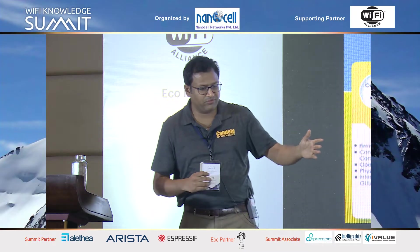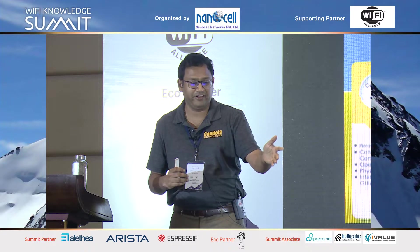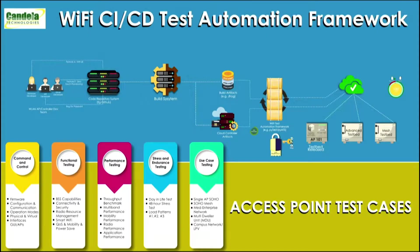The framework is automating almost 10,000 test cases for Wi-Fi testing; right now we have about 3,000–4,000 automated. They cover basic command and control — firmware upgrade/downgrade, LED status, physical interfaces, wireless interfaces, virtual interfaces, bridge mode, VLAN mode, NAT mode, and all APIs. Then functional testing: security, BSS capabilities, radio resource management, smart Wi-Fi features, QoS, mobility, and power save — covering all functional aspects of the access points and controller.